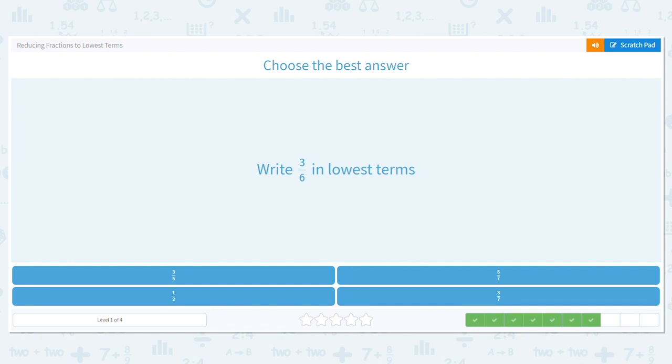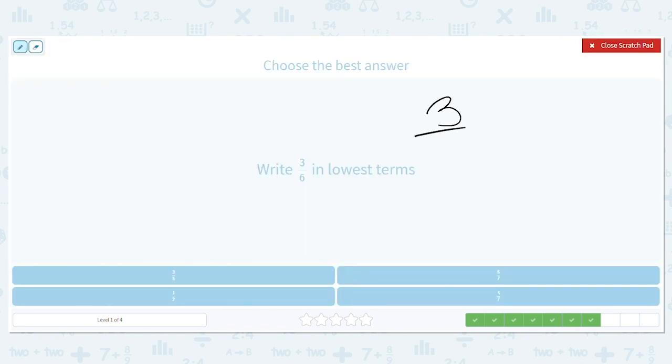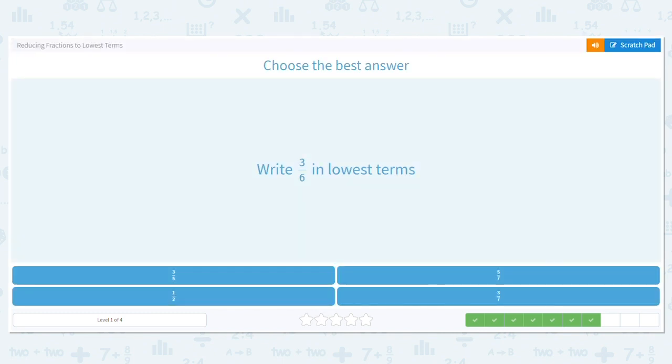Okay, we have 3 sixths. Guess what? Is 3 half of 6? Yes, it is. 3 divided by 3 equals 1, and 6 divided by 3 equals 2. 1 half.